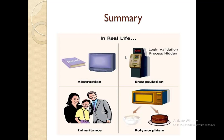Let's take a quick recap of all four concepts. In the real world, consider a TV — how movies play on the TV, all the complexities are hidden from the user. This is called abstraction. An ATM machine: the login validation process is hidden from the user — how it validates the user is encapsulated within the ATM machine. A microwave oven is used to bake a cake as well as make popcorn — one machine performing two different tasks. This is called polymorphism. And inheritance: a child class derives all the characteristic traits of its parents.